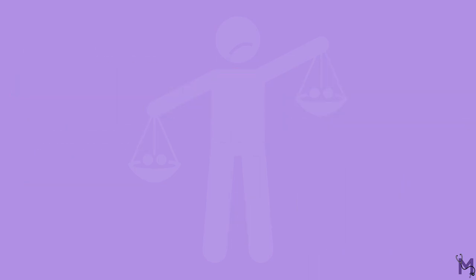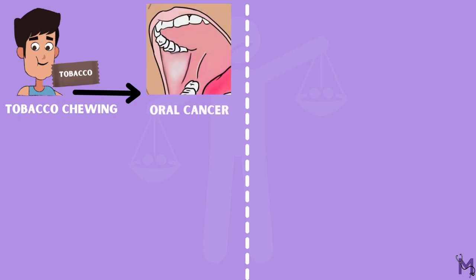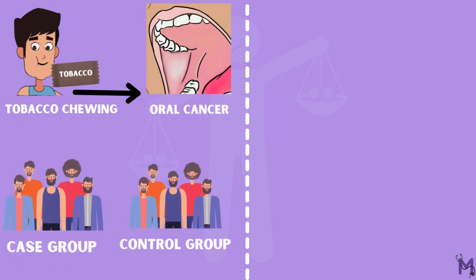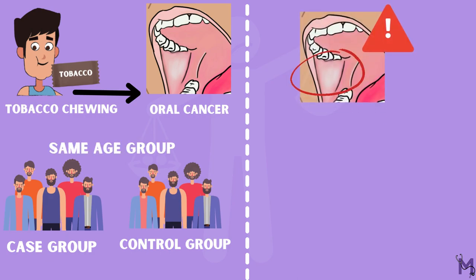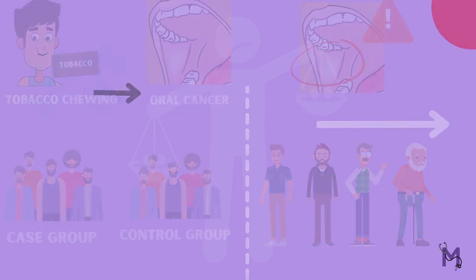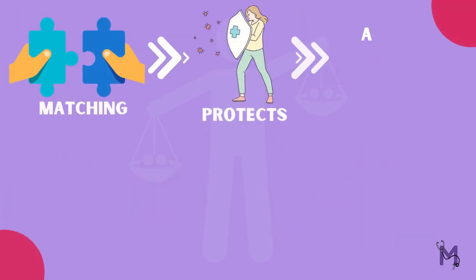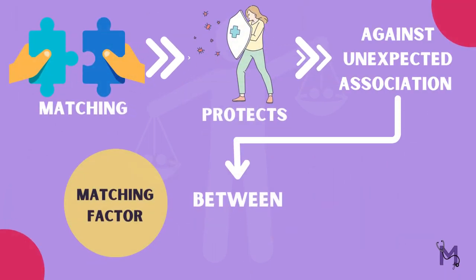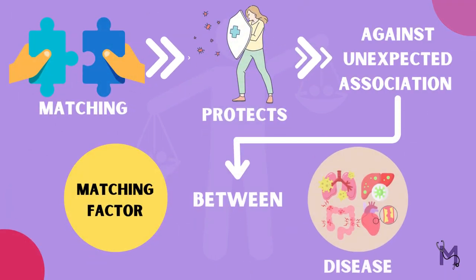For example, if we were to study the relationship between tobacco chewing and oral cancer, we need to make sure that both case and control groups contain people of the same age group, since the risk of oral cancer seemingly increases with age. Matching protects against an unexpected association between the matching factor and the disease.